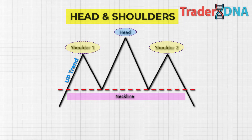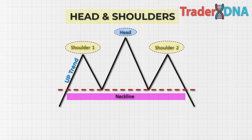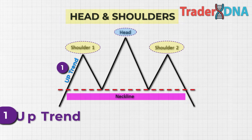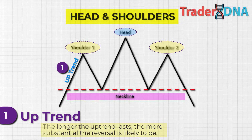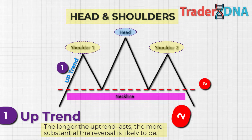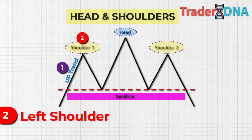We need both shoulders and the head of the pattern before we can identify the neckline. Step one — uptrend: the first part of a head and shoulders pattern is the uptrend, when the price keeps going up until it starts getting tired. Generally the longer the uptrend lasts, the bigger the reversal is likely to be. Step two — left shoulder: the market moves down a bit to create a higher low.